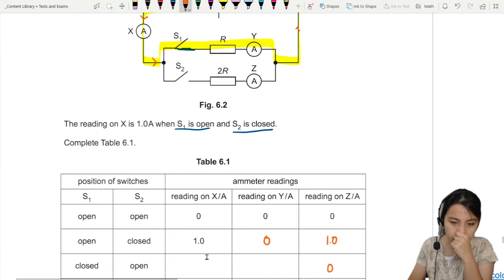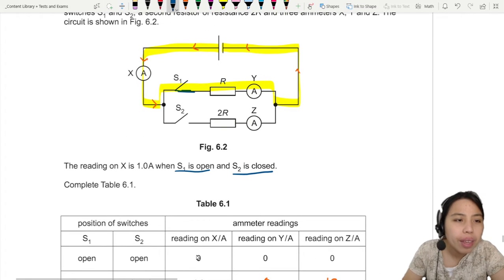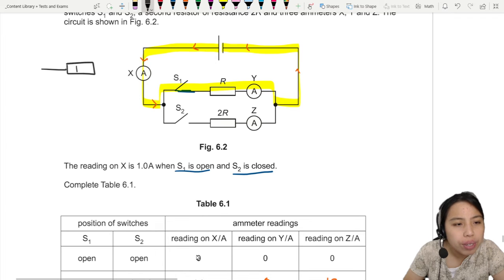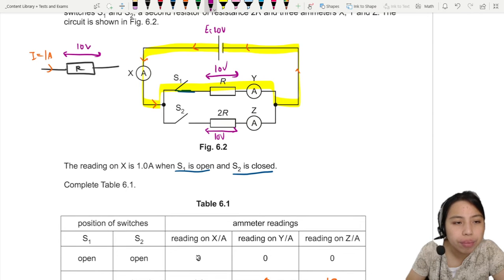But what about these two though? X and Y. Is it also 1? Let's think about it for a moment. Just now, when we had this resistance 2R, the current was 1A. Let's just say this EMF is 10 volts. These 10 volts is still the same value across both resistors.